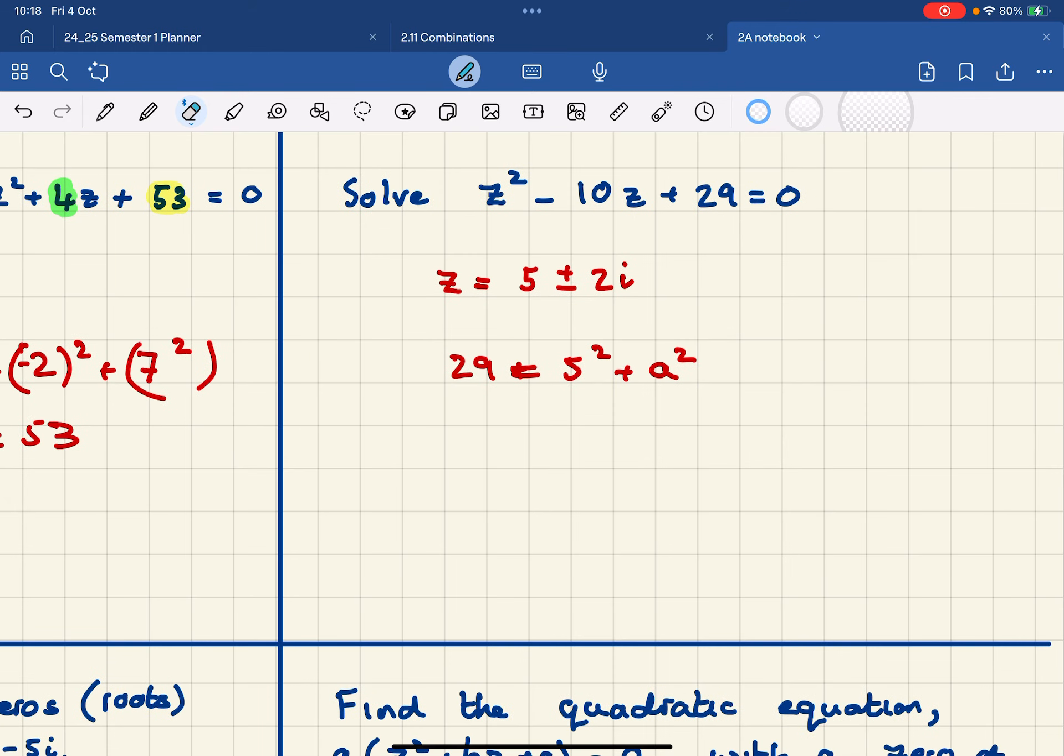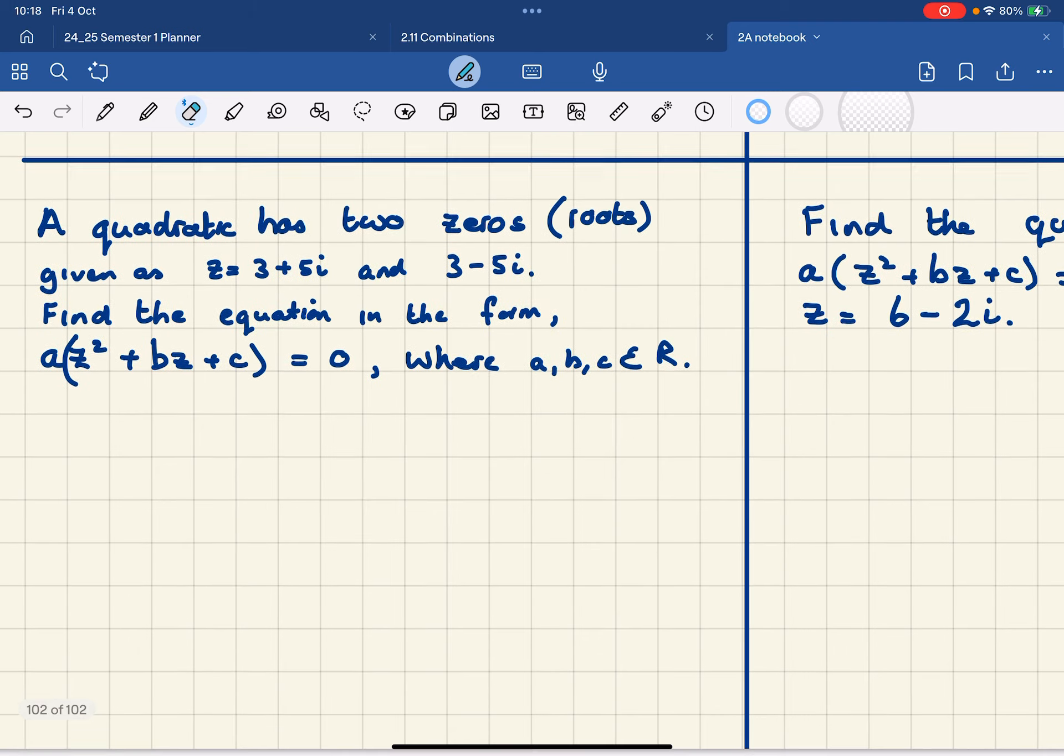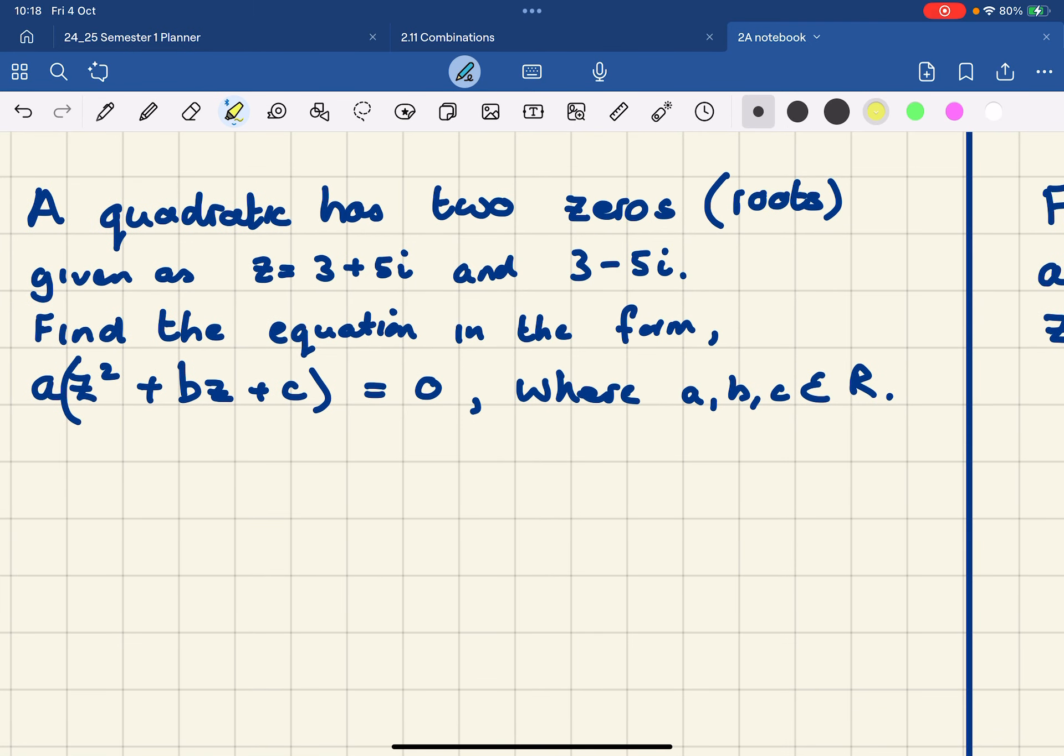So we can also go the other way with these. Instead of having the quadratic equation and finding the roots, if we're given these two roots—there's one root and there's the other root, which is z equals 3 minus 5i.